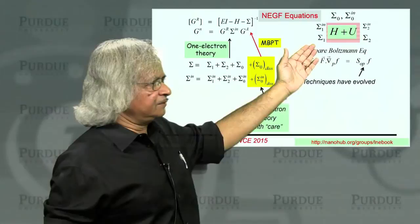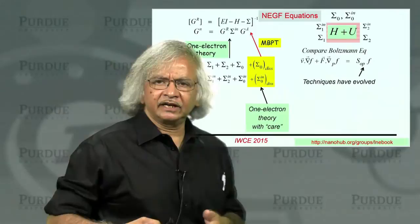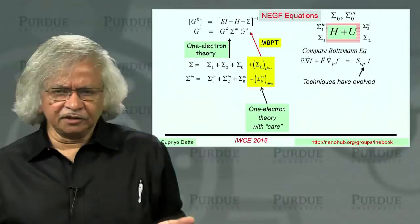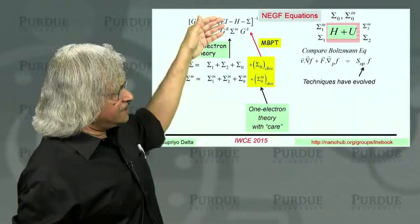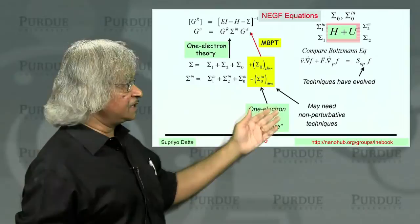So think of the Boltzmann equation, for example. The right-hand side is the scattering operator. And how you calculate all that, those methods have evolved. You use Fermi's golden rule, which Boltzmann didn't know about. It came after his time. And similarly here, we can expect that these are the equations and as we move on, we'll develop different methods for getting sigmas. Some of these might even need non-perturbative techniques.